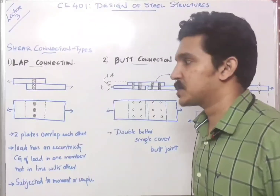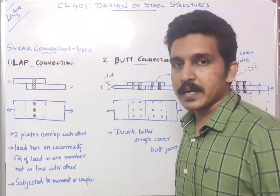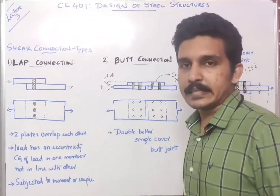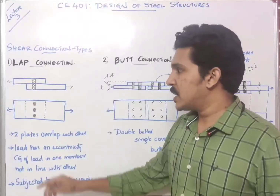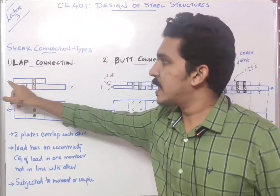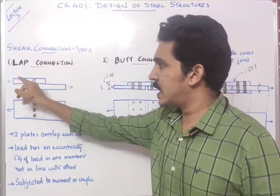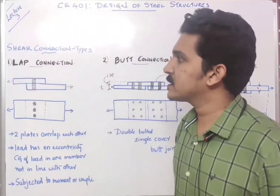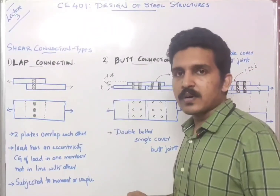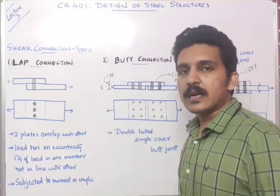The first one is lap joint or lap connection. In a lap connection, there are two plates that should be connected — one on top of the other, meaning the two plates overlap each other. The problem with this type of connection is that the plates, one on top and the bottom, each experiences a force. These forces are not in the same straight line; they are in two different lines and the center of gravity of both loads is in a different plane. This creates an additional need to design for a couple or moment, which is the disadvantage of the lap connection.